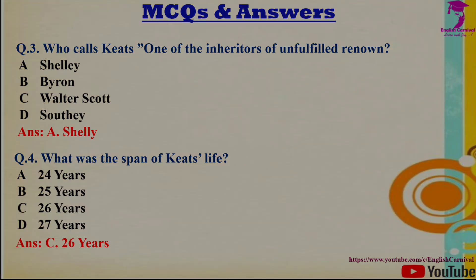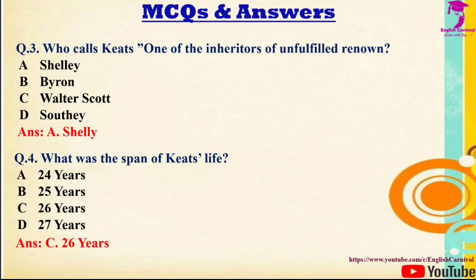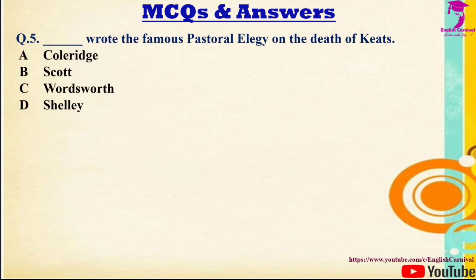Question 5: Who wrote the famous pastoral elegy on the death of John Keats? Options: A) Coleridge, B) Scott, C) Wordsworth, D) Shelley. Correct answer is D — P.B. Shelley.